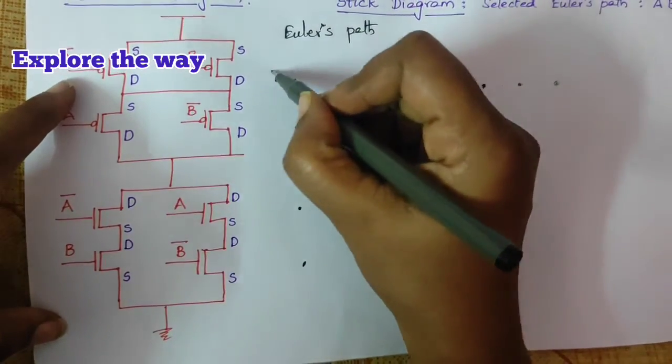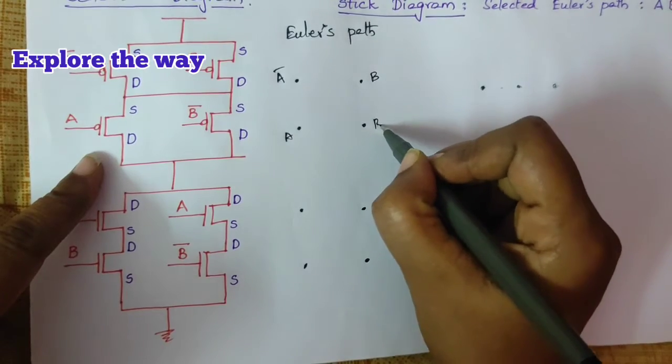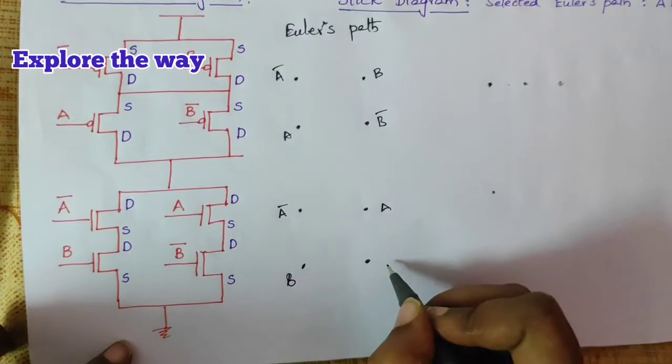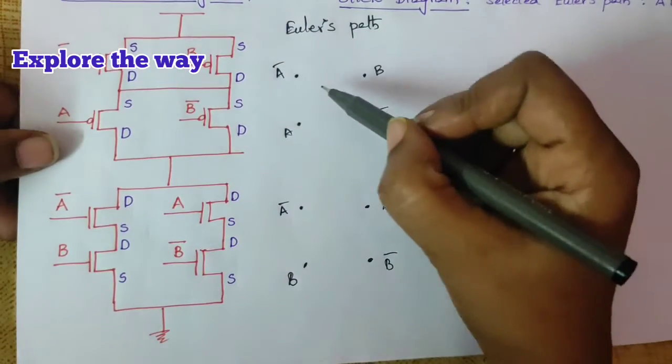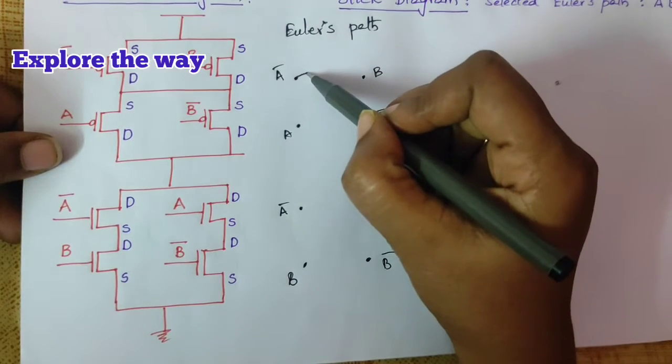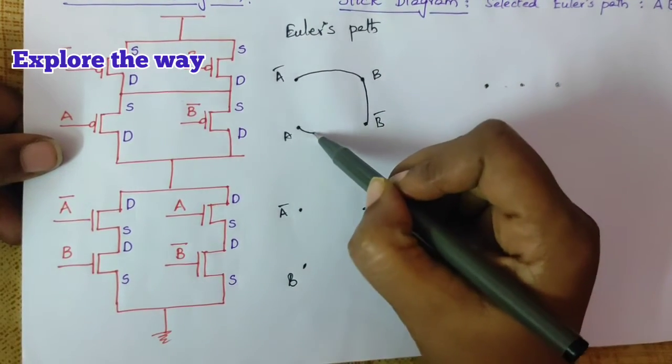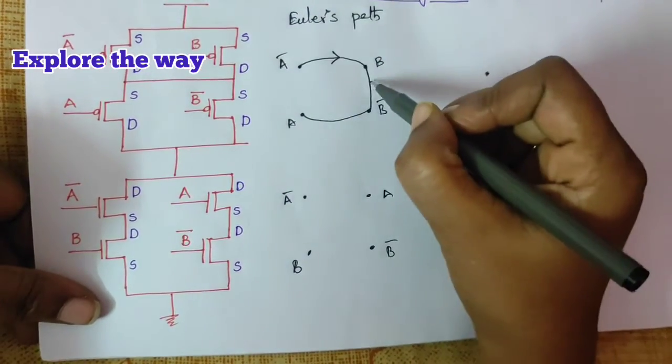I am starting from a bar. A bar b, b bar a. An uninterrupted path.